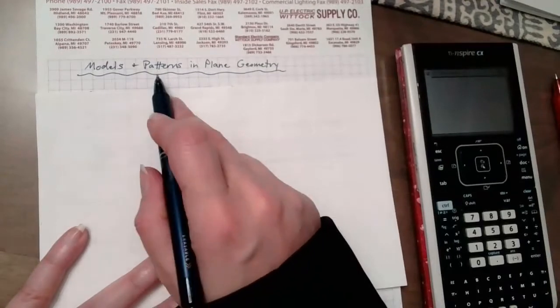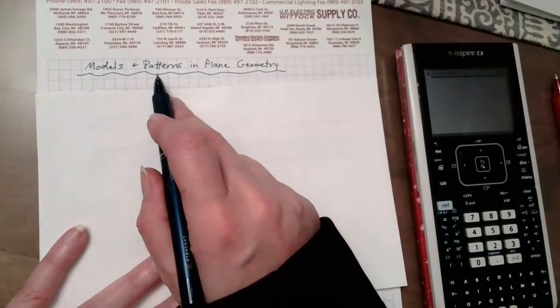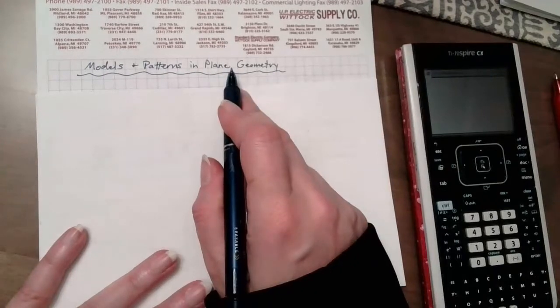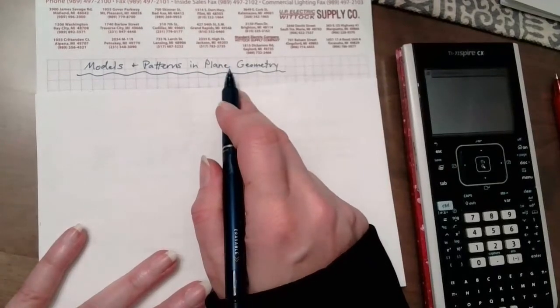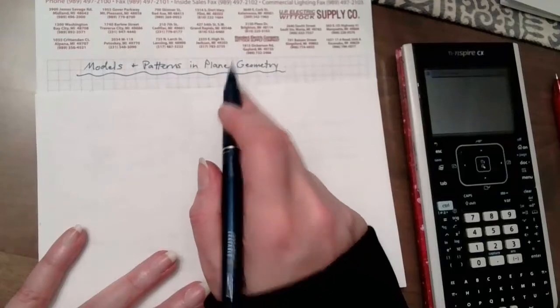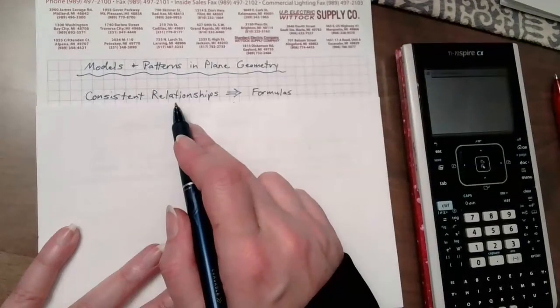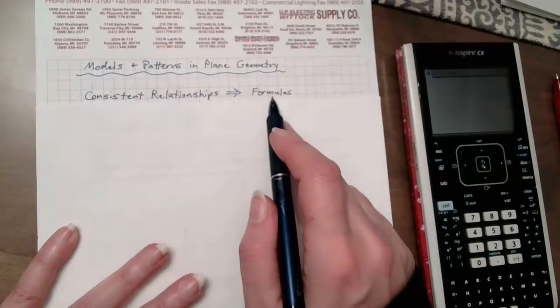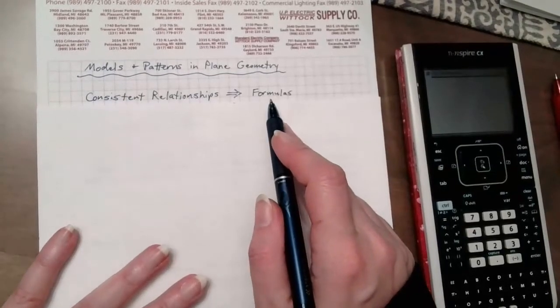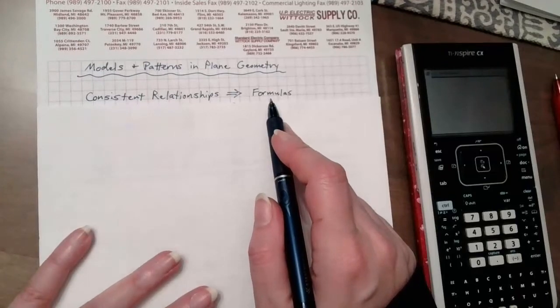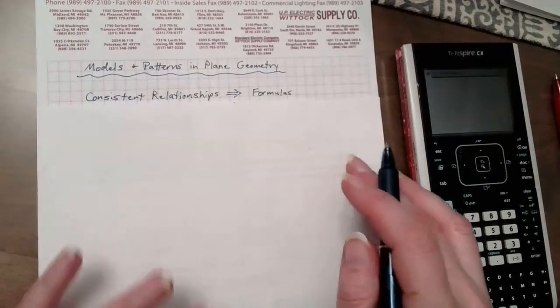And so models and patterns, well this is how all of math works, really and truly. People have been studying different things, in this case shapes, and saying, you know what, every time I have a circle, this happens. Every time I have a triangle, this happens. And what this does is, because we can see all of these consistent relationships within our shapes, we can make formulas to go with them. And that way, every time somebody comes across a shape, they don't have to reinvent the wheel and come up with a formula themselves. They already exist, and we can just use those relationships.